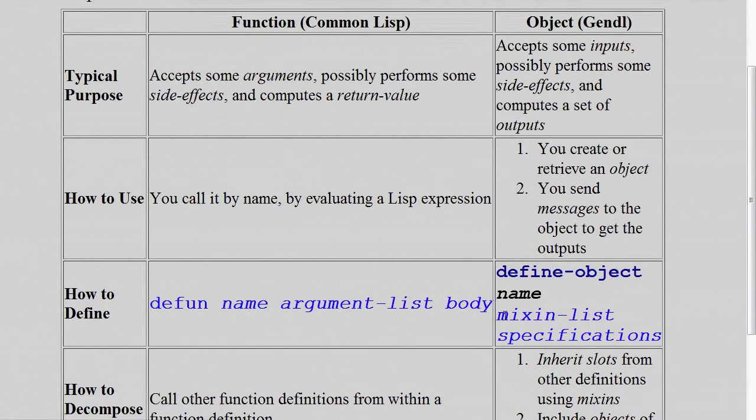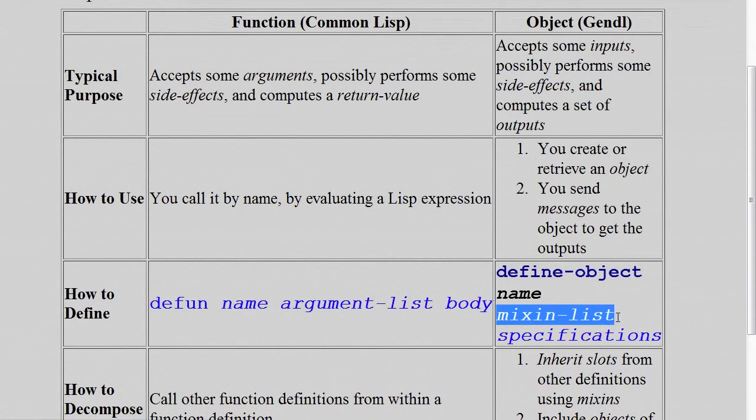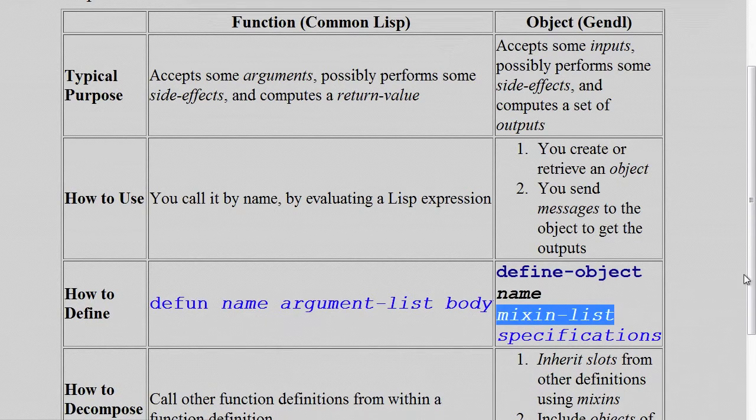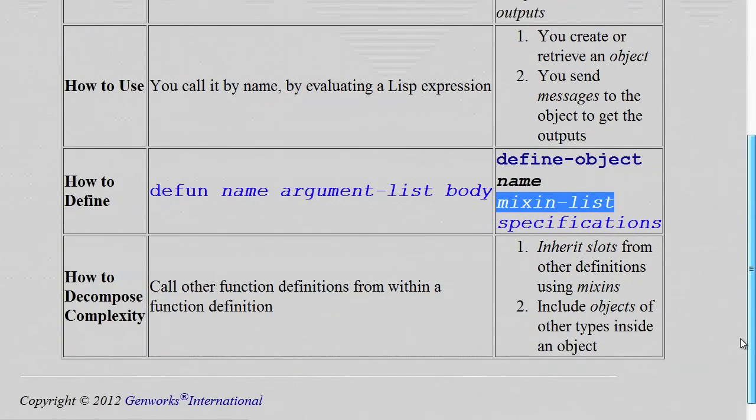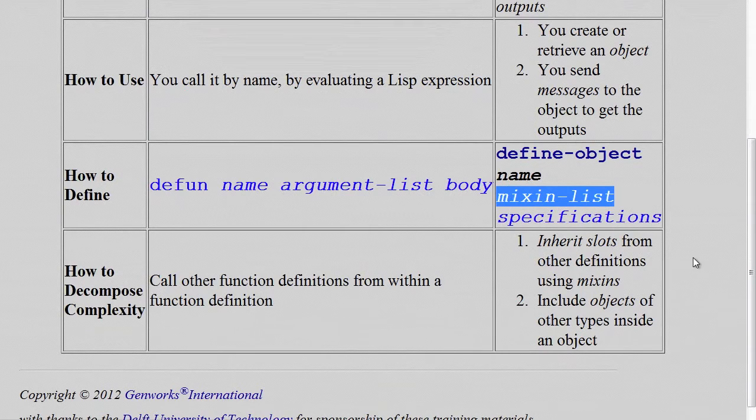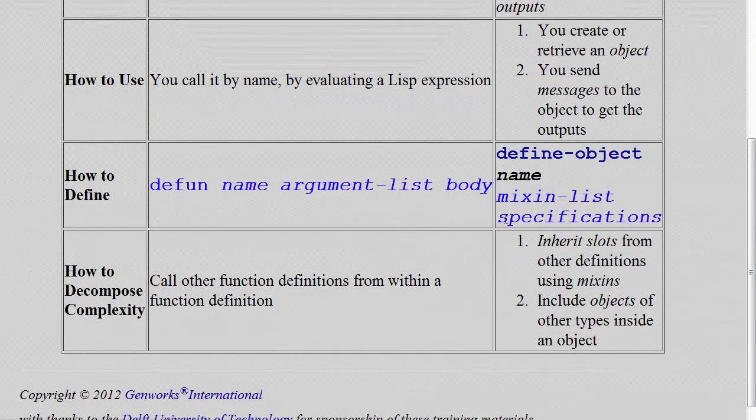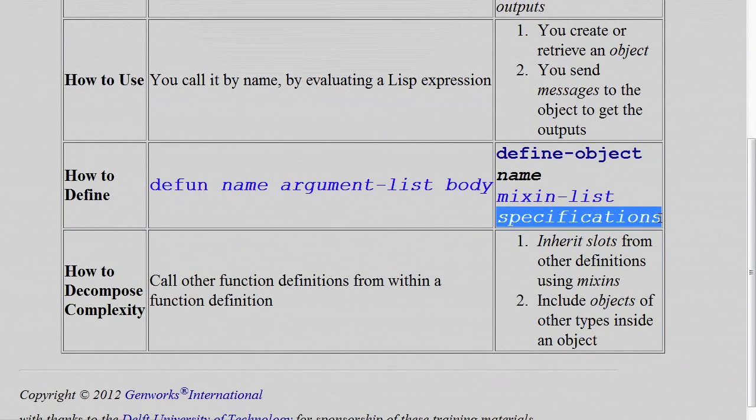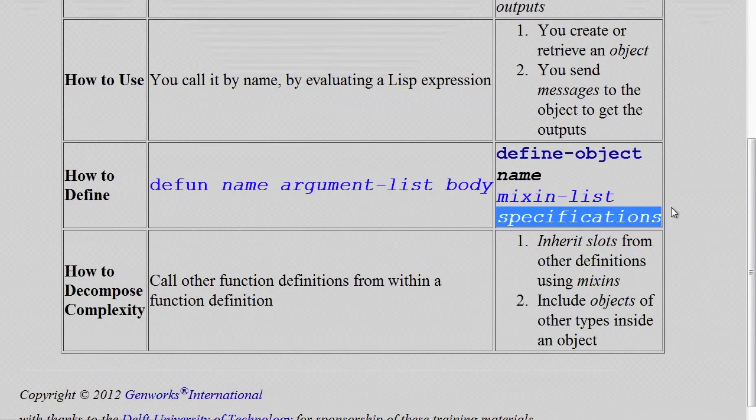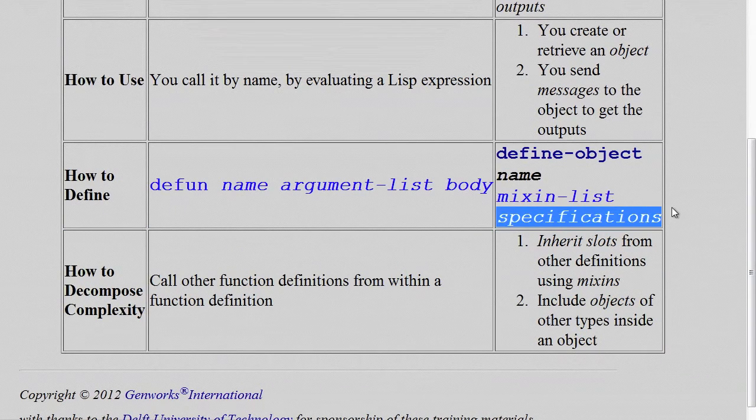But now, instead of an argument list, you give a mix-in list. The mix-in list is other objects that this object inherits, or takes on characteristics of. The mix-in list can be empty. Then specification list, which is your input slots, your computed slots, and so on. It specifies exactly how the object will behave.